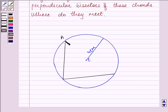Let us name these points as A, B, and D. Now we need to draw the perpendicular bisector of AB first, and then BD.